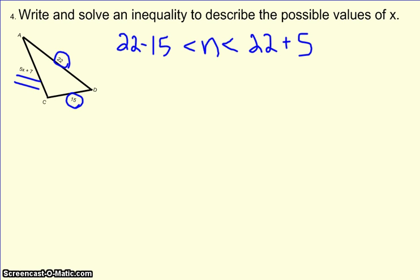So let's go ahead, 22 minus 15 is going to be 7, and 22 plus 15 is going to be 27, and then let's replace this middle side with my 5x plus 7.